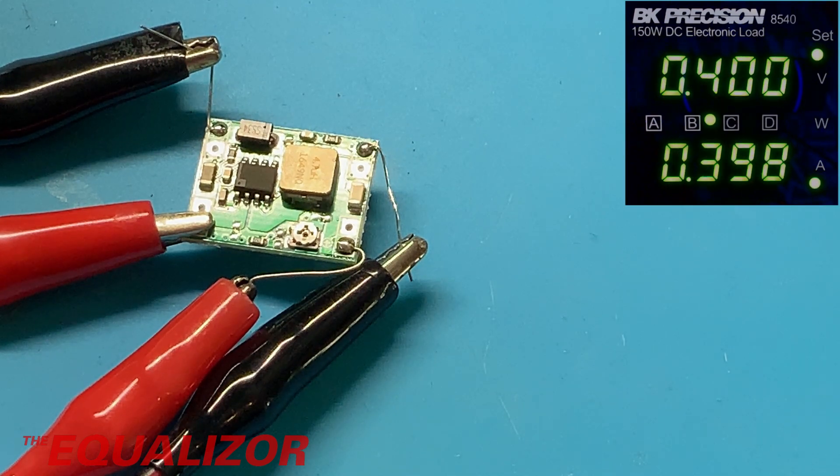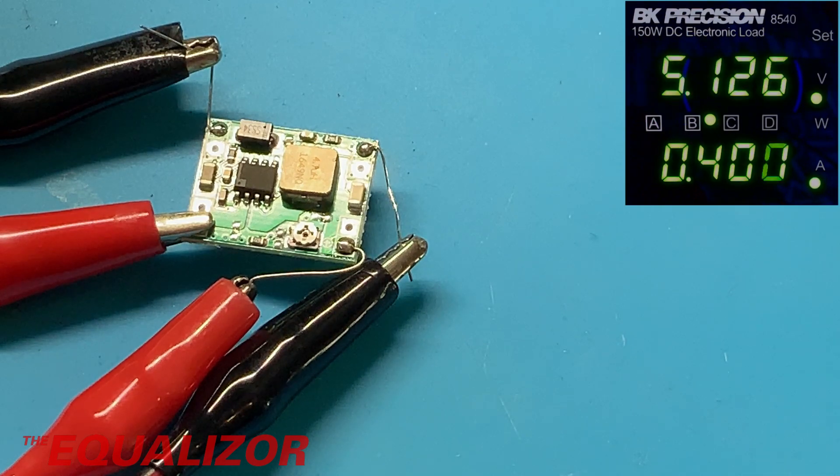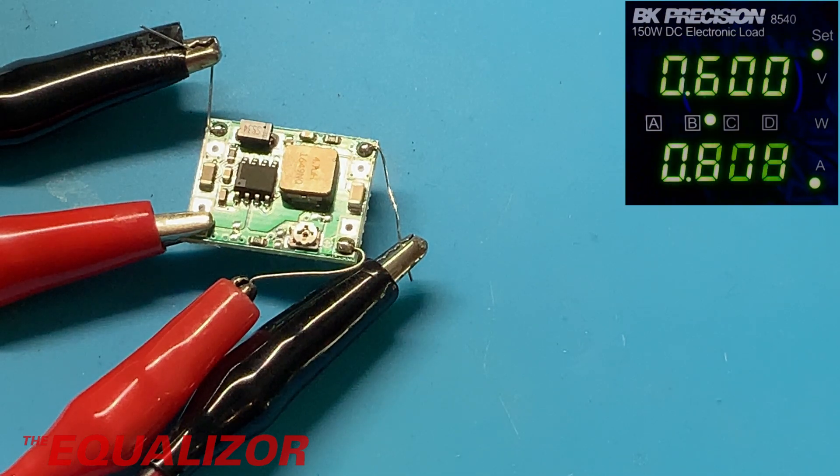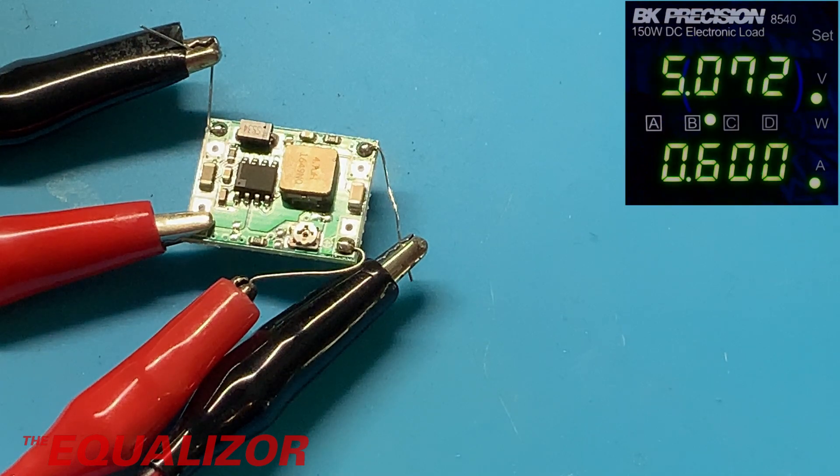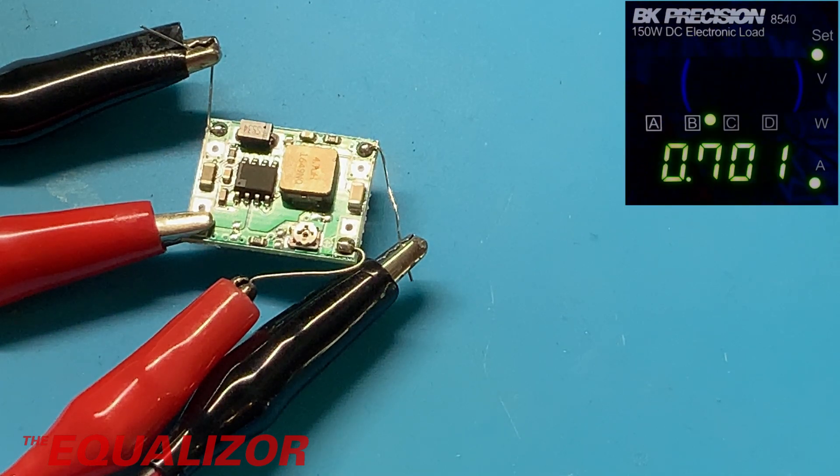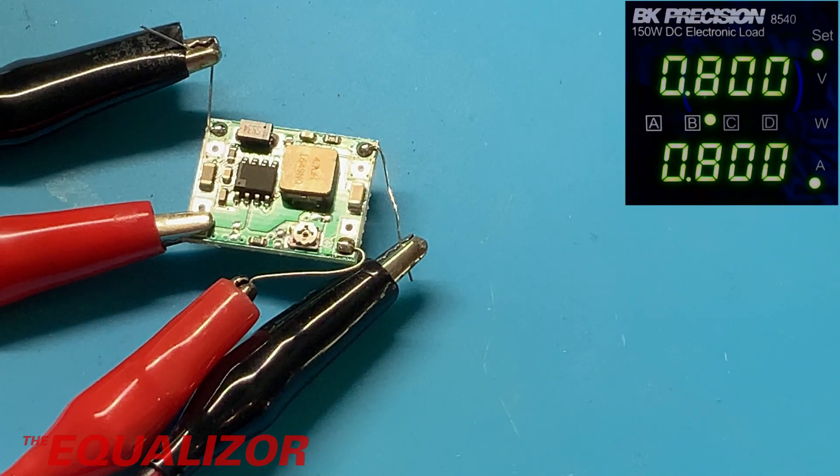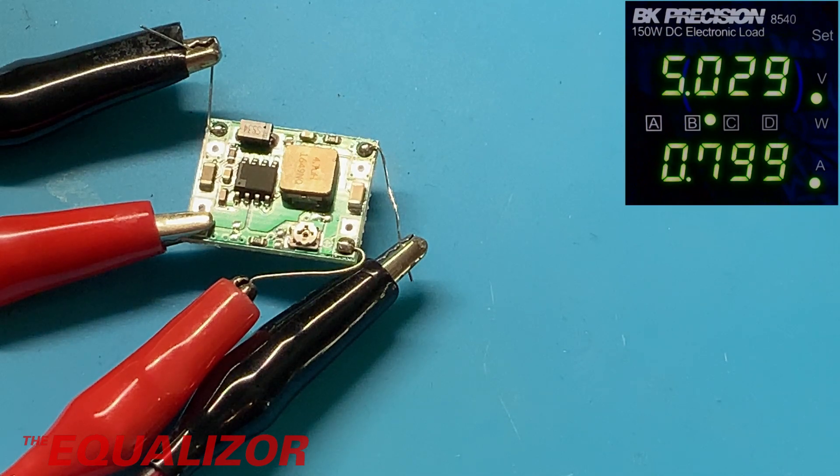300 is fine. 400 fine. 500 dropped a little bit but it's still within what I need it to be. Still within, and 700 it's fine. 800 - this is where I need it to be good. That is absolutely fine.